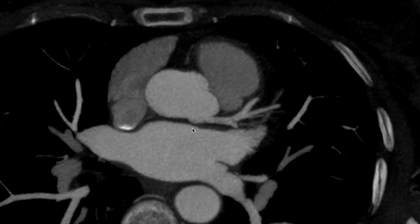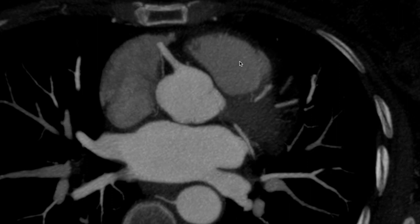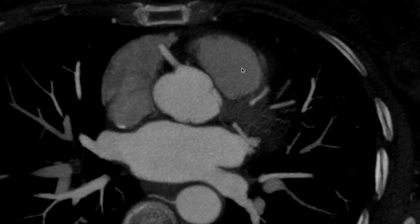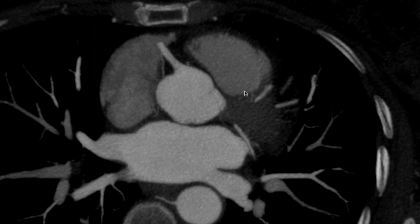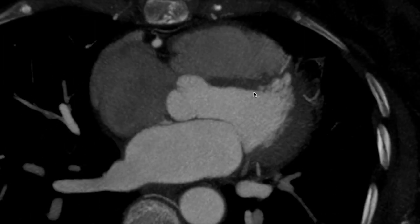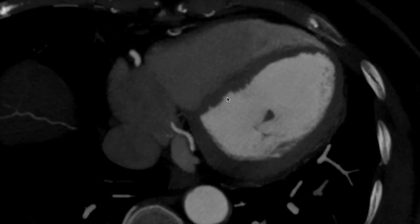Before we go on to understand the course of the coronary arteries, these are the few terminologies we need to know. Between the right ventricle and the left ventricle we have a groove called the interventricular groove. In the cranial aspect of the heart it is the anterior interventricular groove, and as we scroll down and reach the base of the heart it becomes the posterior interventricular groove.